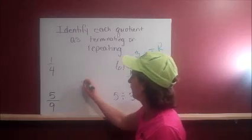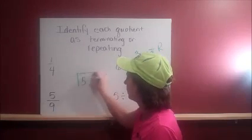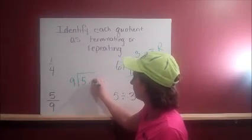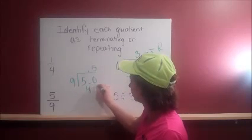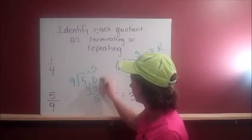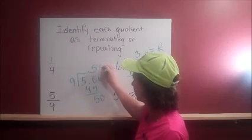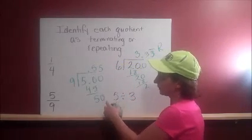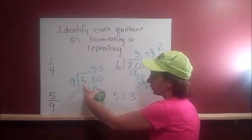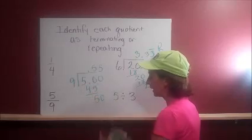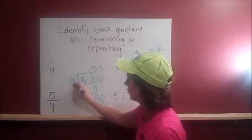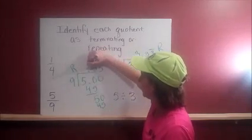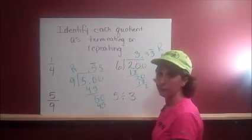Now let's try 5 ninths, 5 divided by 9. Two steps tells me this is going to repeat. Because this 50 and this 45 are repeating, which means these numbers here are repeating. So we would say that this is a repeating decimal of 0.5.